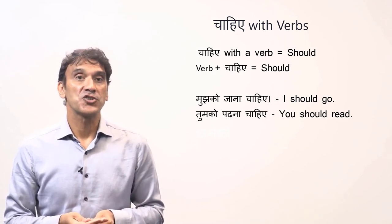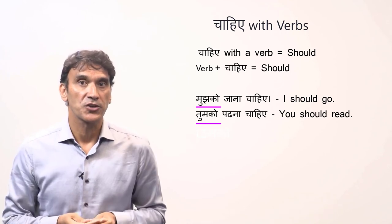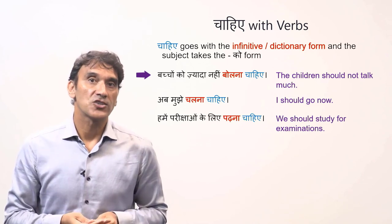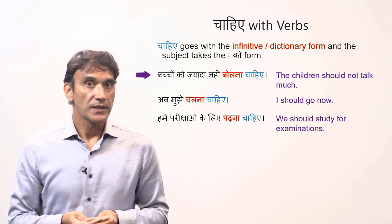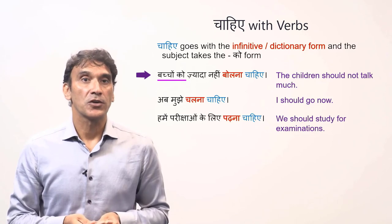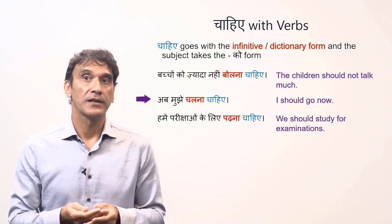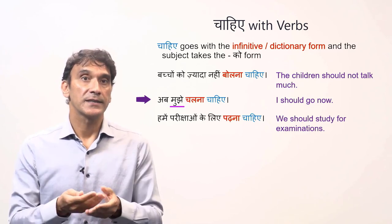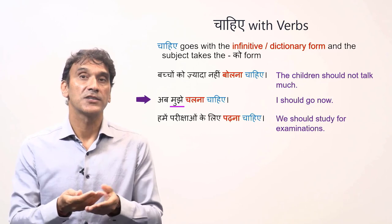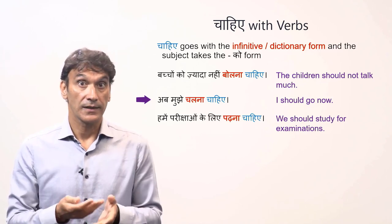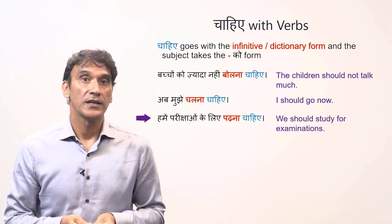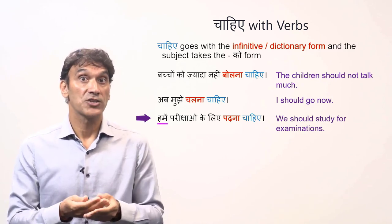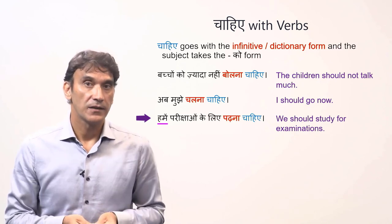Remember that the phrase chahiye takes the subject with the postposition ko. For example: 'bacchon ko zyada nahi bolna chahiye' — the children should not talk much; the subject goes with ko, so bacchon ko. 'Ab mujhe chalna chahiye' — I should go now; the subject is mujh ko, here in short form mujhe. 'Hamei parikshan ke liye padhna chahiye' — we should study for examinations. Hamei is humko — humko padhna chahiye, we should study.